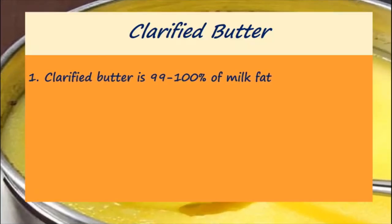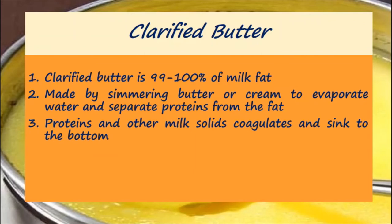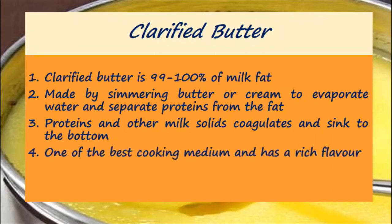Clarified Butter is 99–100% milk fat. It is made by simmering butter or cream to evaporate water and separate proteins from the fat. Proteins and other milk solids coagulate and sink to the bottom. It is one of the best cooking mediums and has a rich flavor.